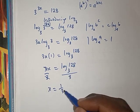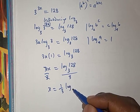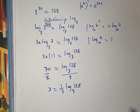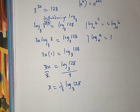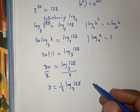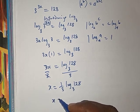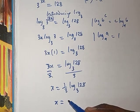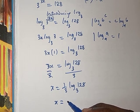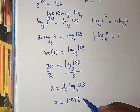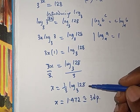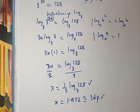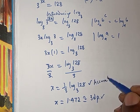We have x to be equals 1 over 3, log base 3 of 128. Now what do you think we can do? We can actually leave our answer like this, or when you press your calculator, we can see that we have x to be equals, by calculator, 1.472 approximately to 3 decimal places. It's either you leave your answer like this or this, but it is more accurate having it this way than this because this is an approximated value. Do you understand?